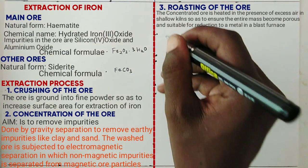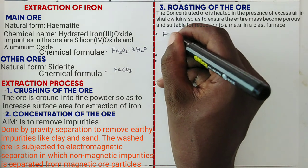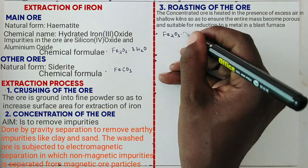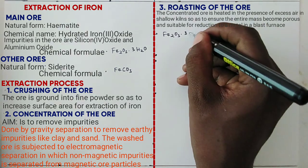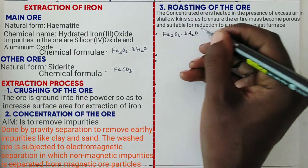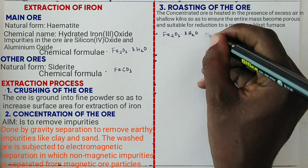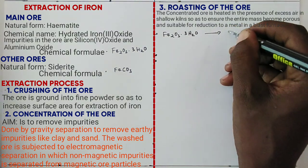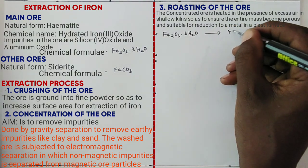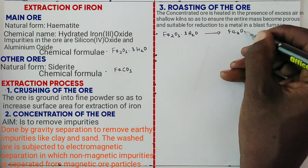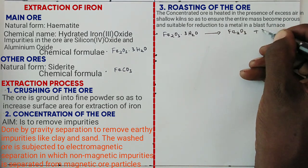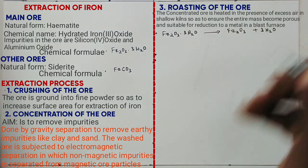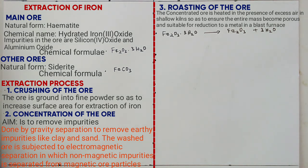The reactions in the roasting process occur as follows. The water of crystallization is removed as per the equation: Fe2O3·3H2O when heated gives iron(III) oxide plus 3H2O.